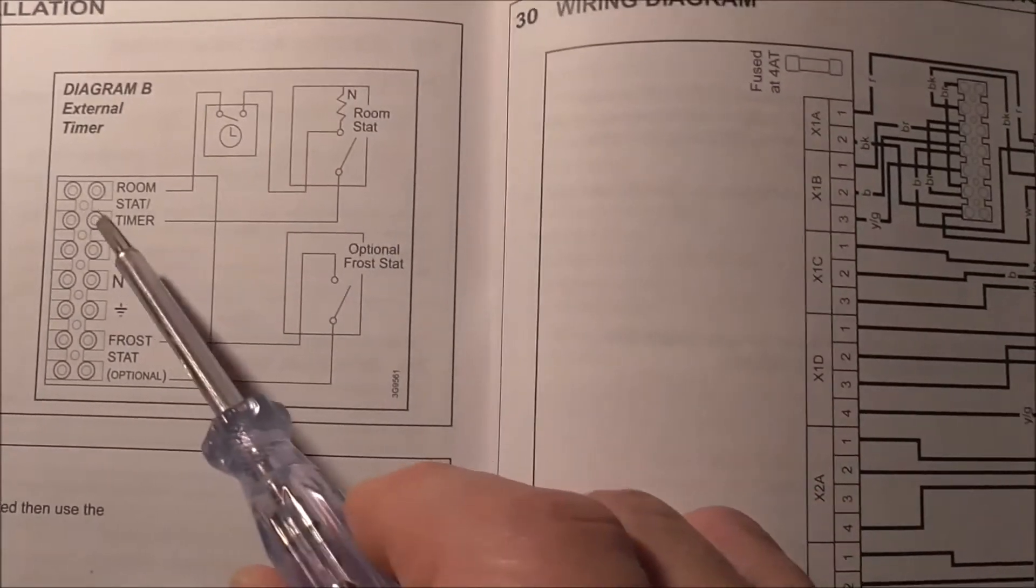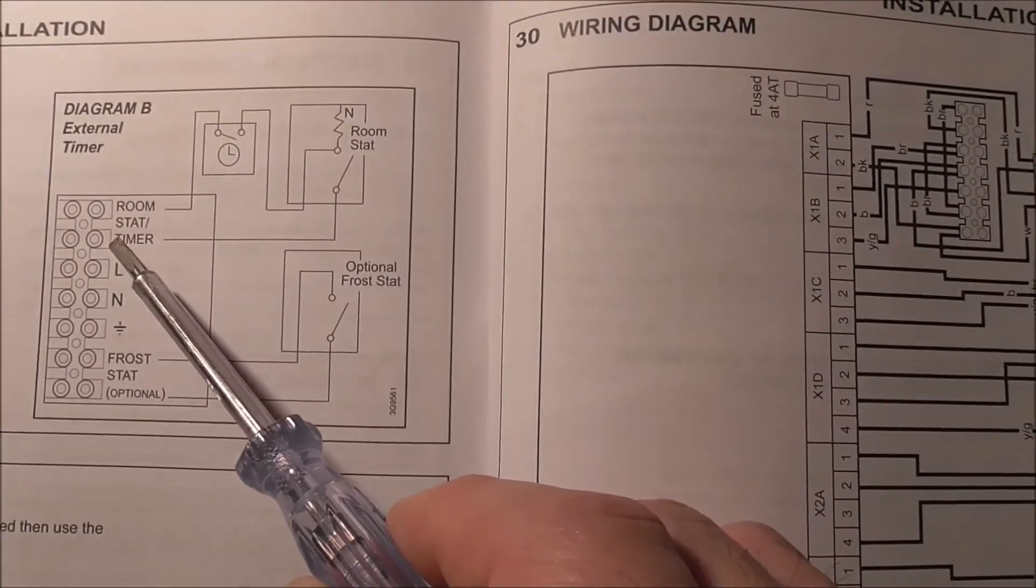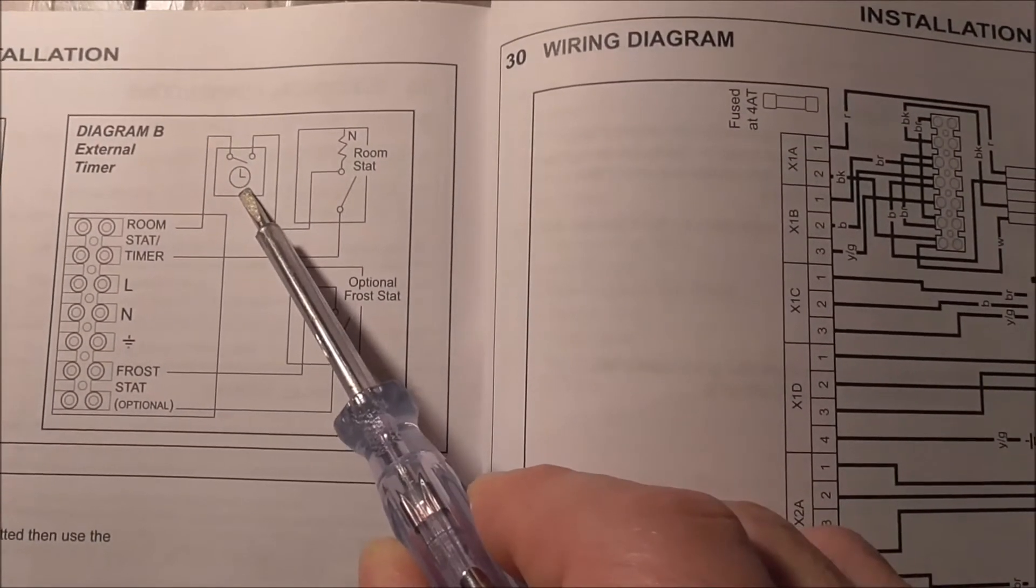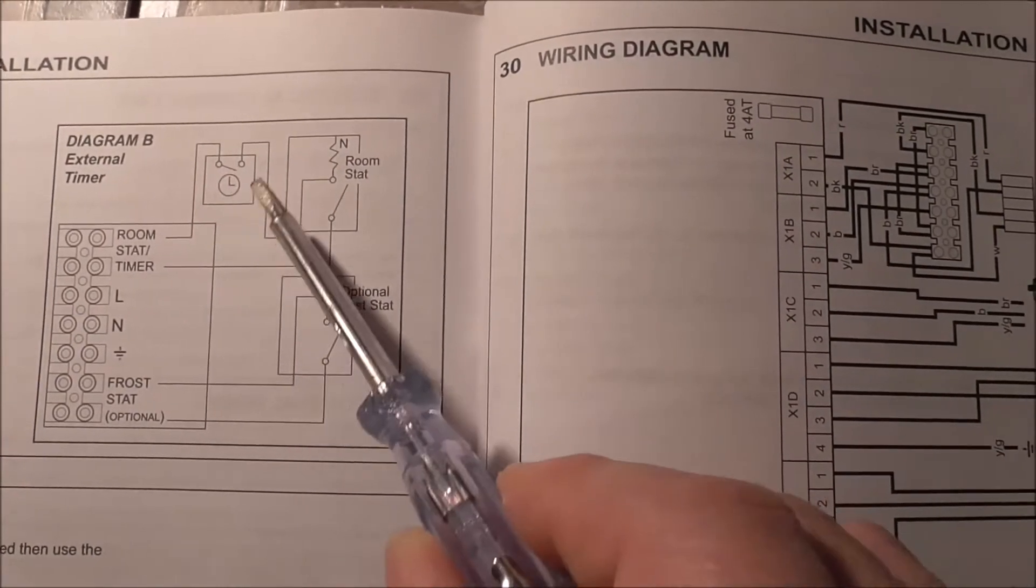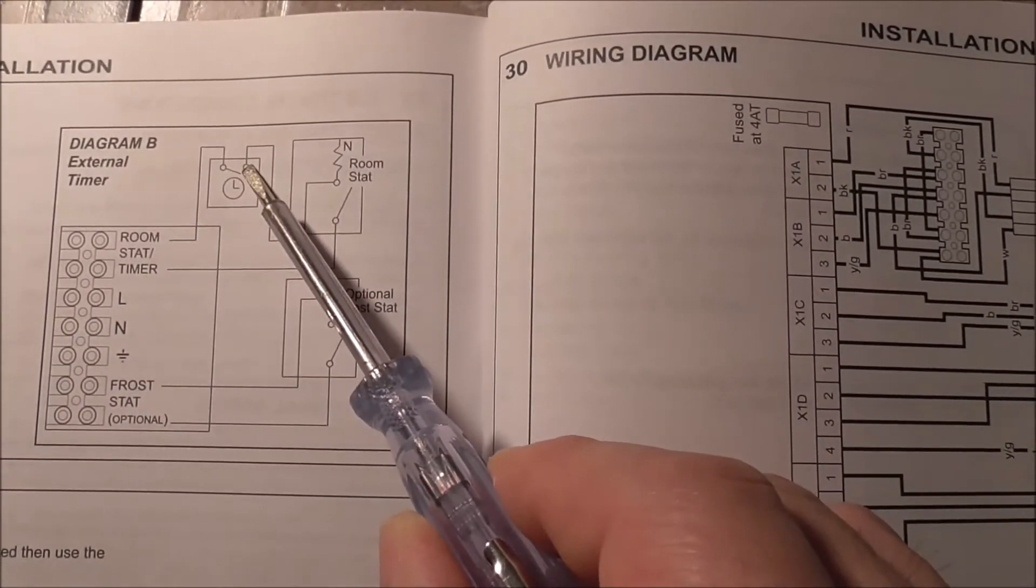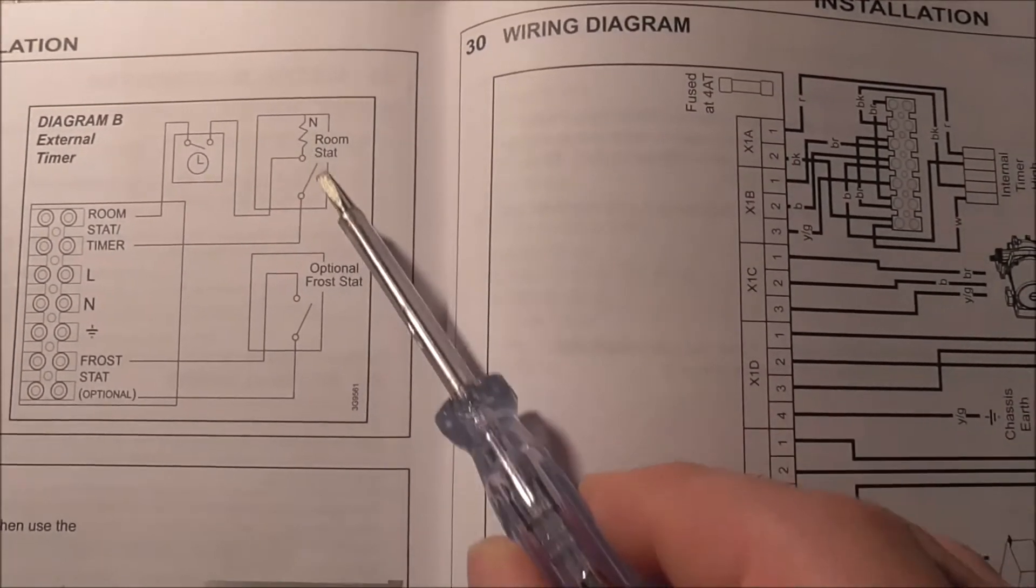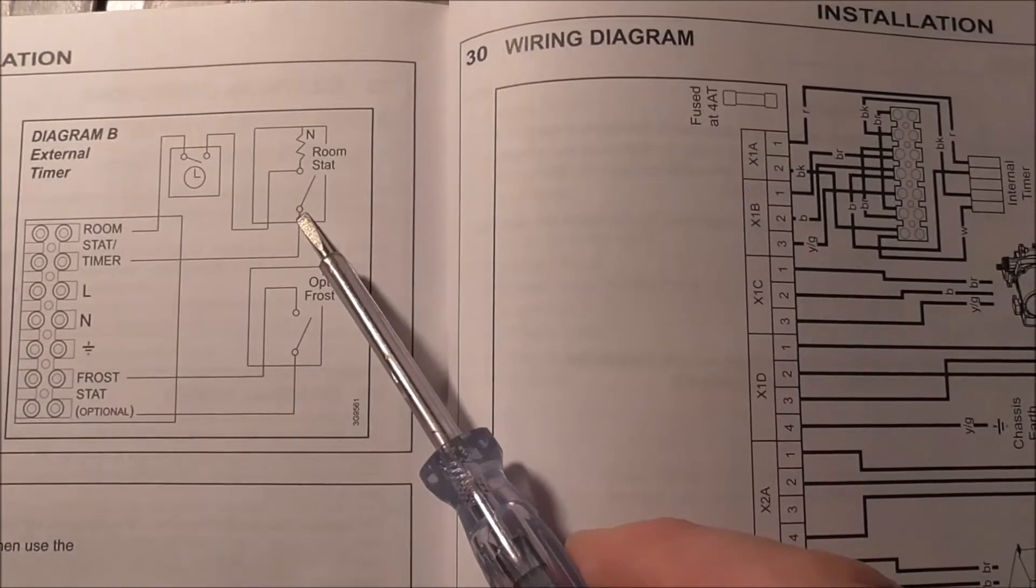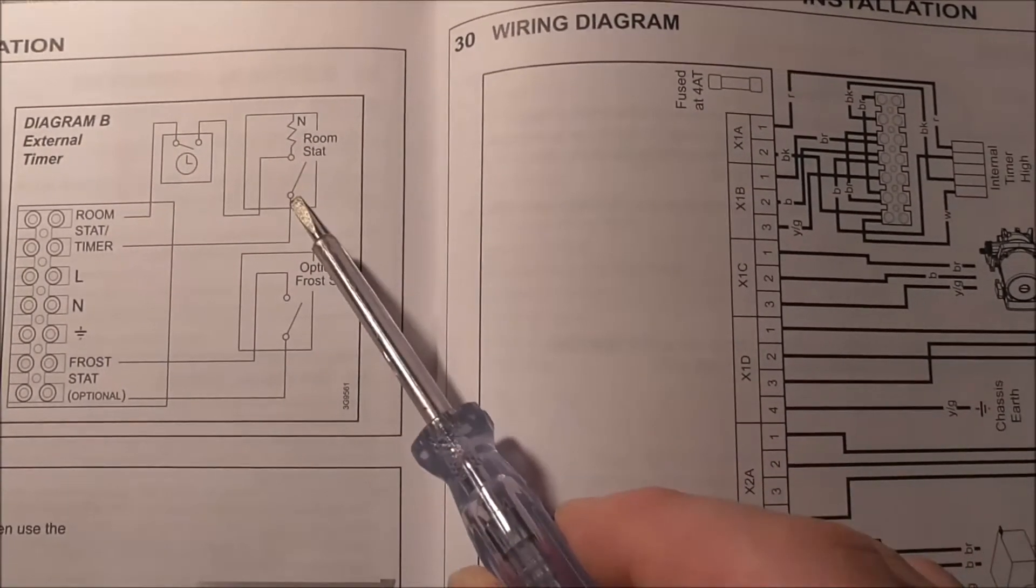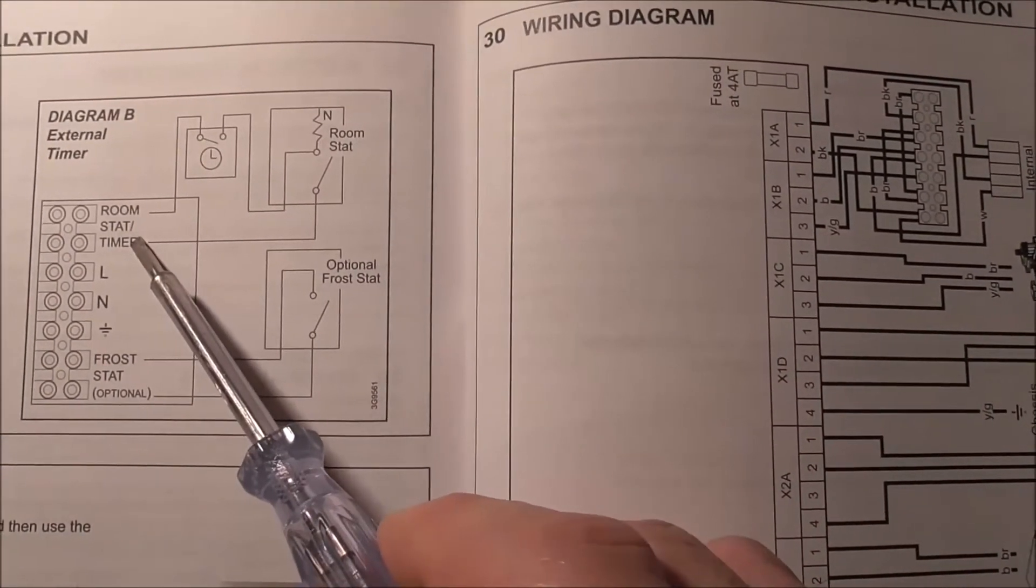So when you have set the on-off time, when it's on time, this will be connected. After this is connected, only when the room temperature is below the set temperature, this will be connected and then back to the boiler.